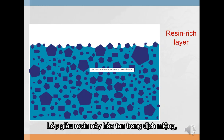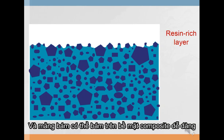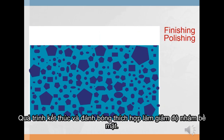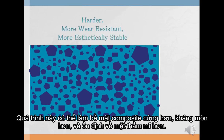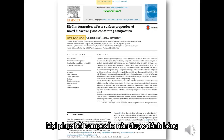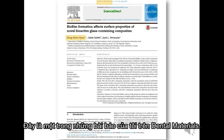This resin-rich layer dissolves in oral fluids, denuding the filler particles and making the surface appear rough. Plaque can accumulate on the composite surface more easily as a result. Proper finishing and polishing procedures decrease surface roughness, can make the composite surface harder, more wear-resistant, and more aesthetically stable. Every composite restoration should be finished and polished in order to improve surface microhardness.